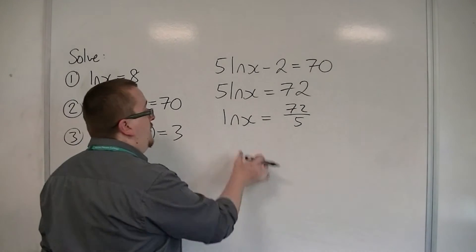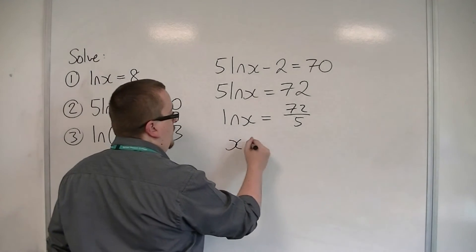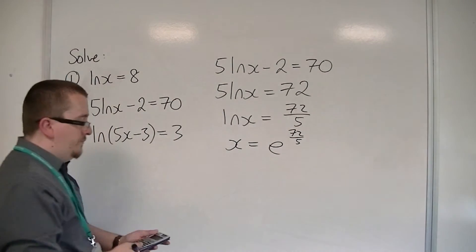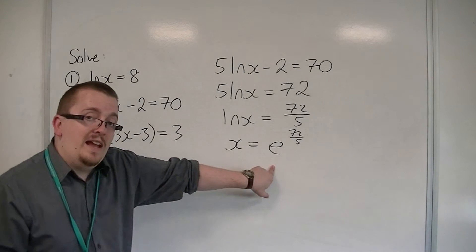So you can e both sides and e to the log x is just x, which will be equal to e to the 72 over 5. So that's the exact answer, the exact solution.